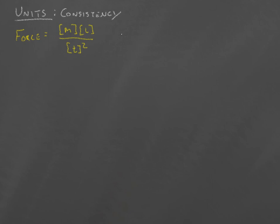And what we'll see later is, for example, the force of gravity is the mass of one object times the mass of another object times a constant called Newton's gravitational constant, G, divided by the distance between the two masses squared.